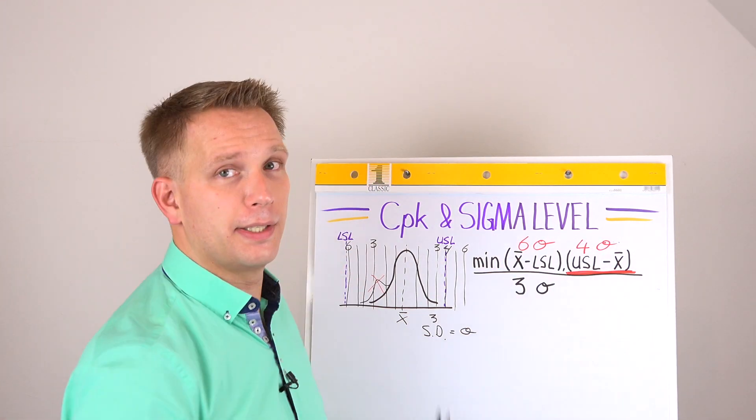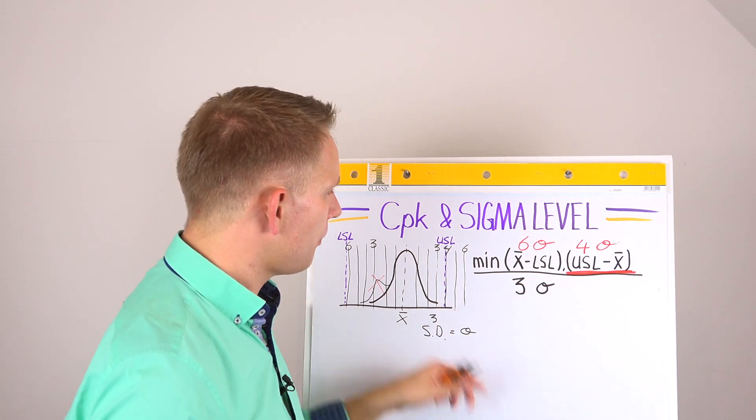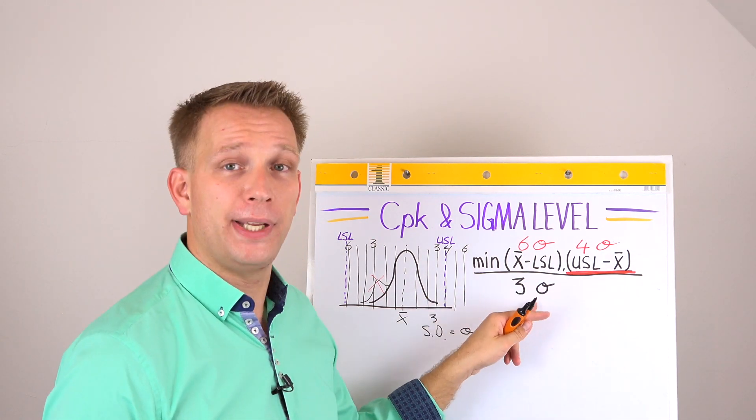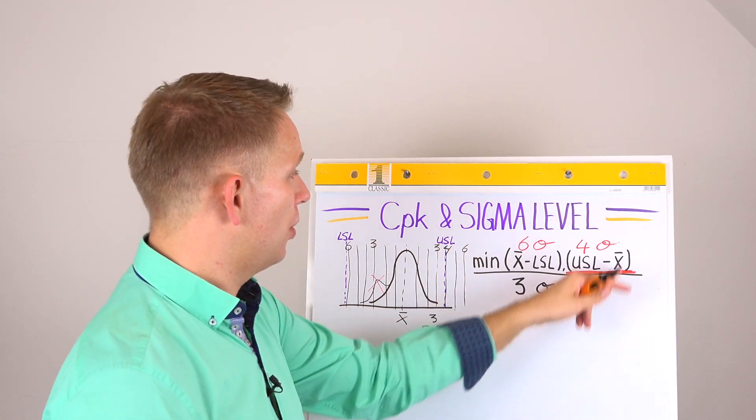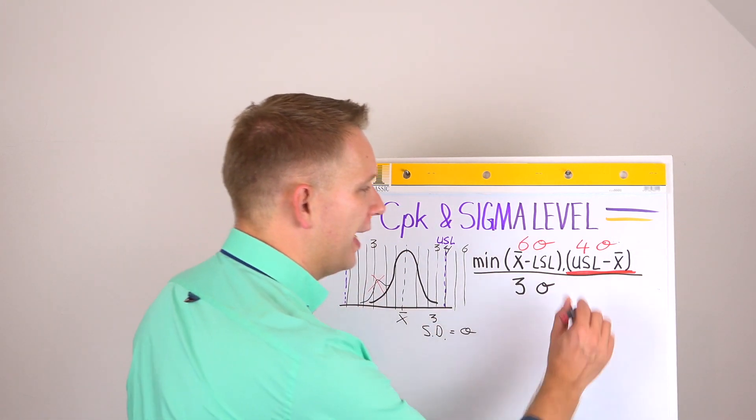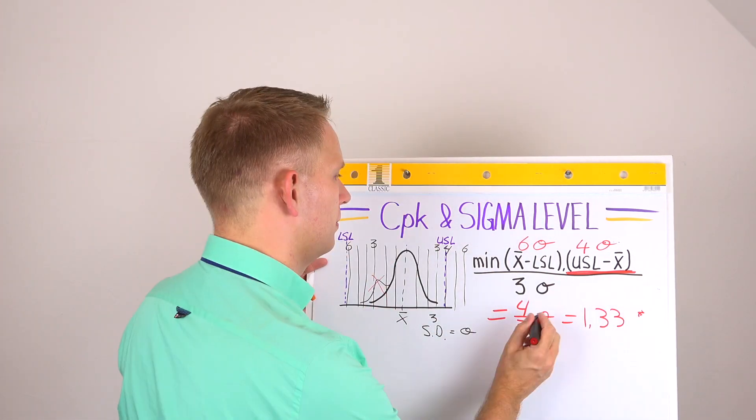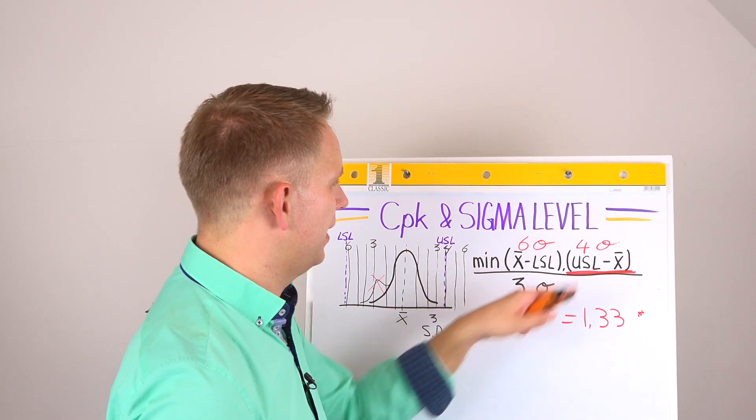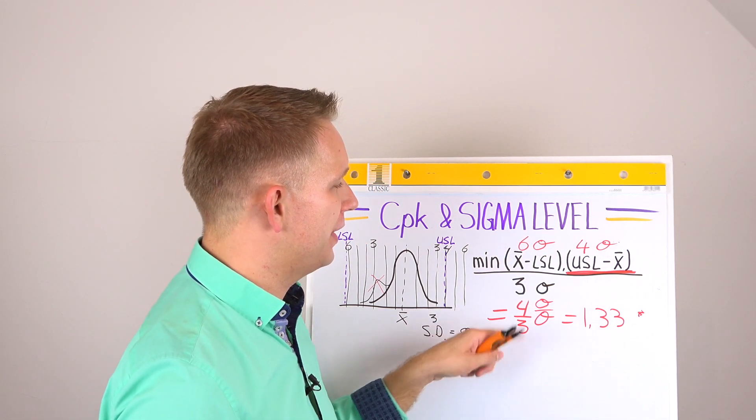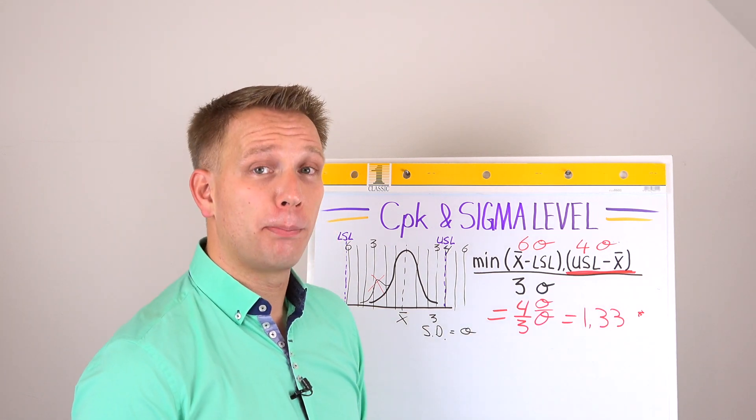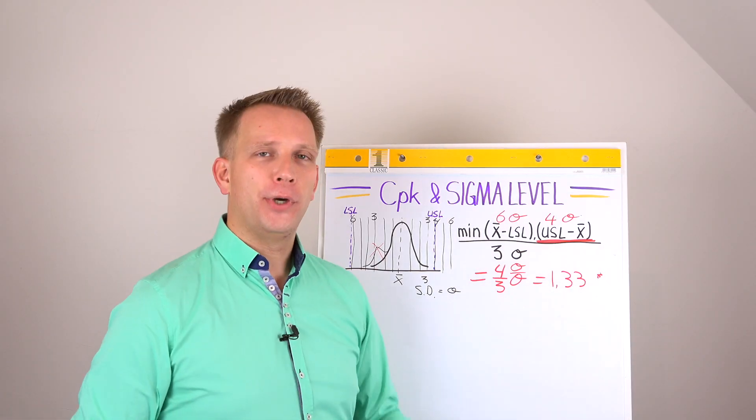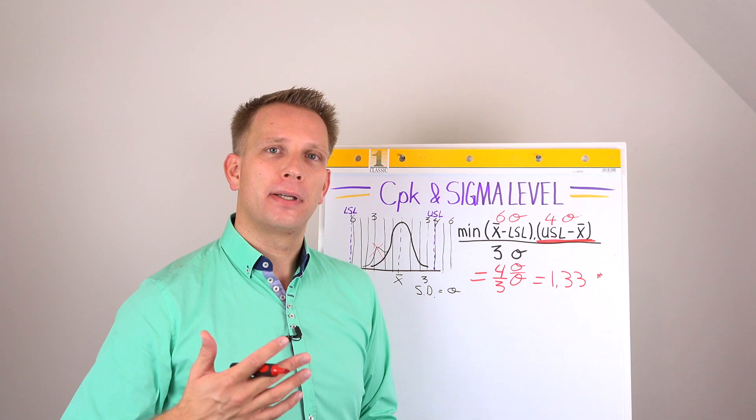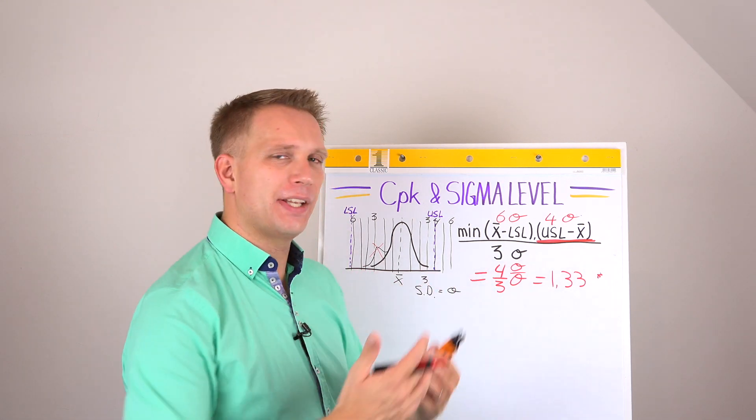So that one there is the lowest, the minimum. And we divide it by three standard deviations. So in our example, what we get - I have to correct it a little bit, because of course we divide four sigma by three sigma, and that makes 1.33. And 1.33 is a number that you will get then as a CPK.